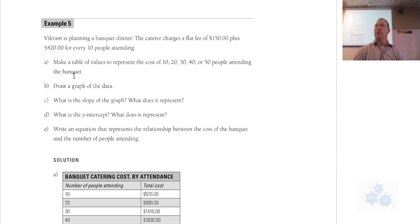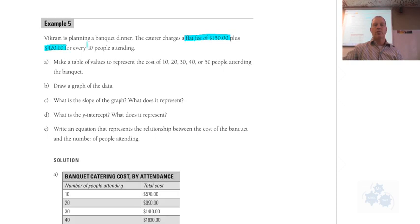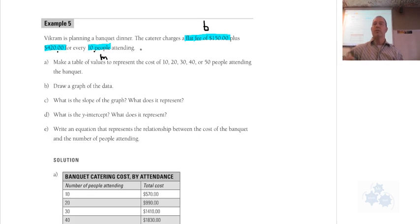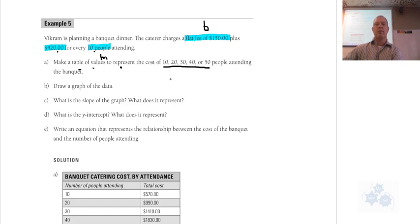Moving on to Example 5 — another type of question. Vikram is planning a banquet dinner. The caterer charges a flat fee of $150 — that's pretty important, a flat fee, that's where the charges begin — and then $420 for every 10 people. That seems like a rate, like it might be a slope. The flat fee seems like it's going to be a b value. Dollars per person seems like it's going to be a slope. To make a table of values for 10, 20, 30, 40, or 50 people, here's what you would do.